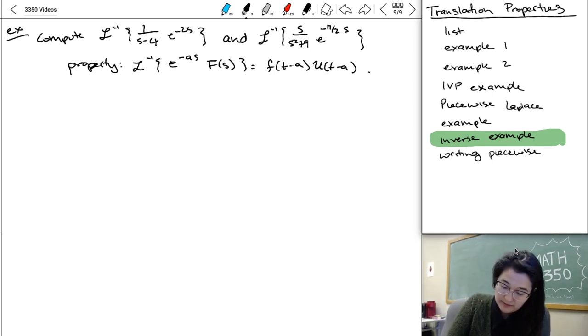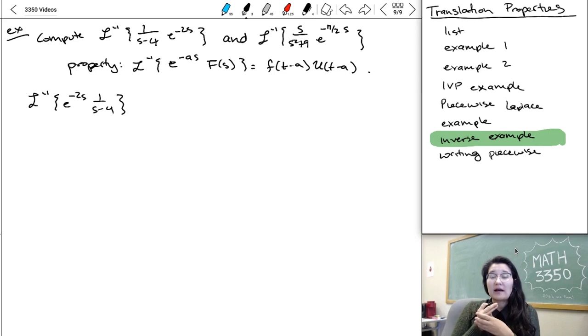So for our first problem, L inverse of e to minus two S one over S minus four, we see an e to minus two S. So that tells us right away that we're thinking about A equal to two. And then the big F is one over S minus four, which means my little F is e to four T.